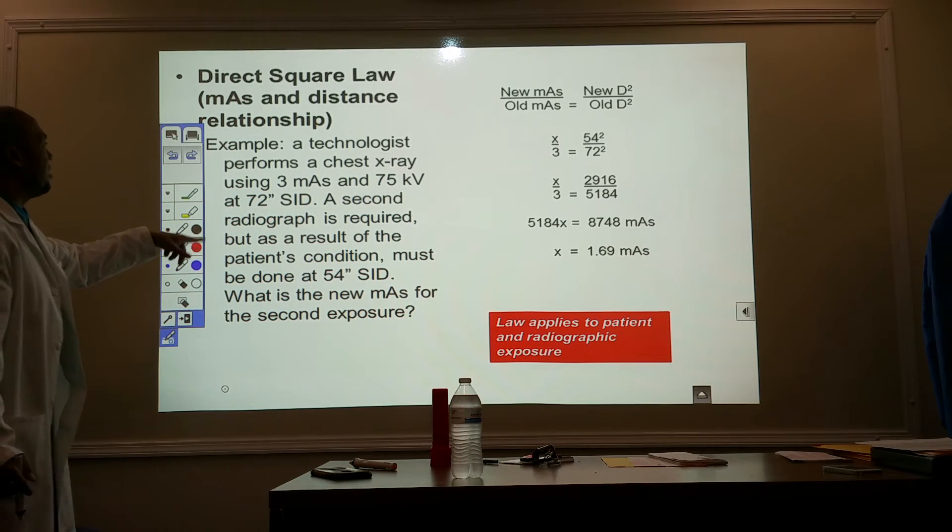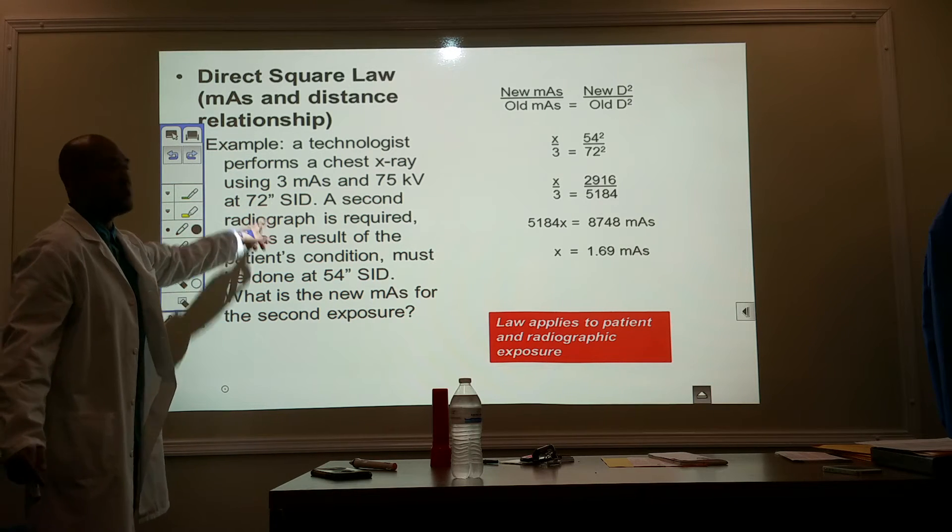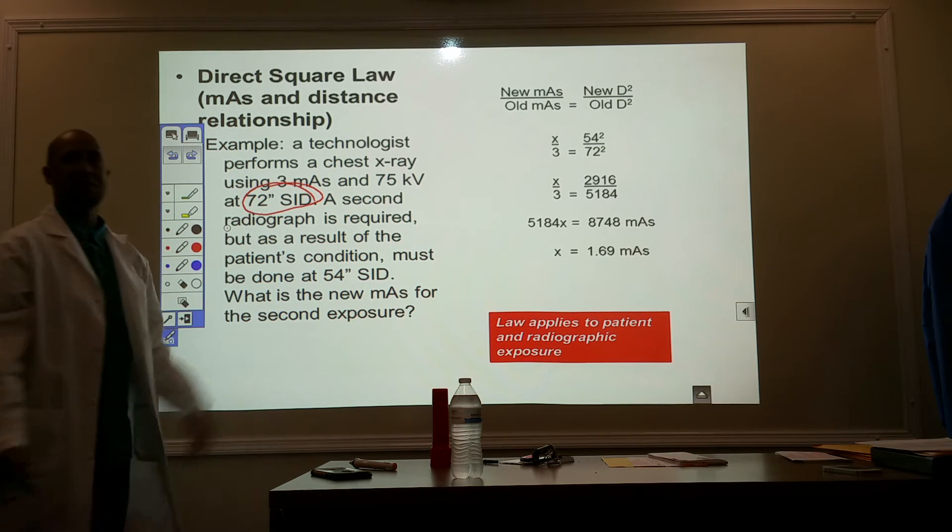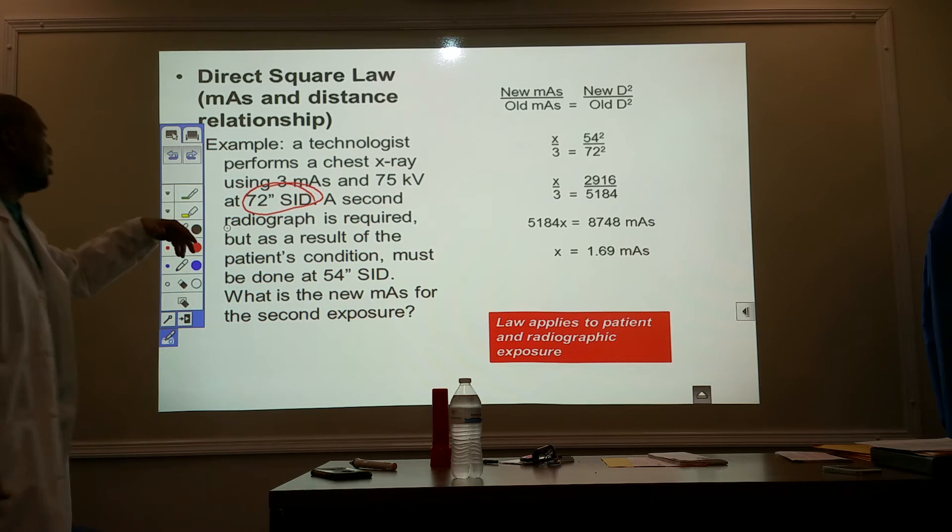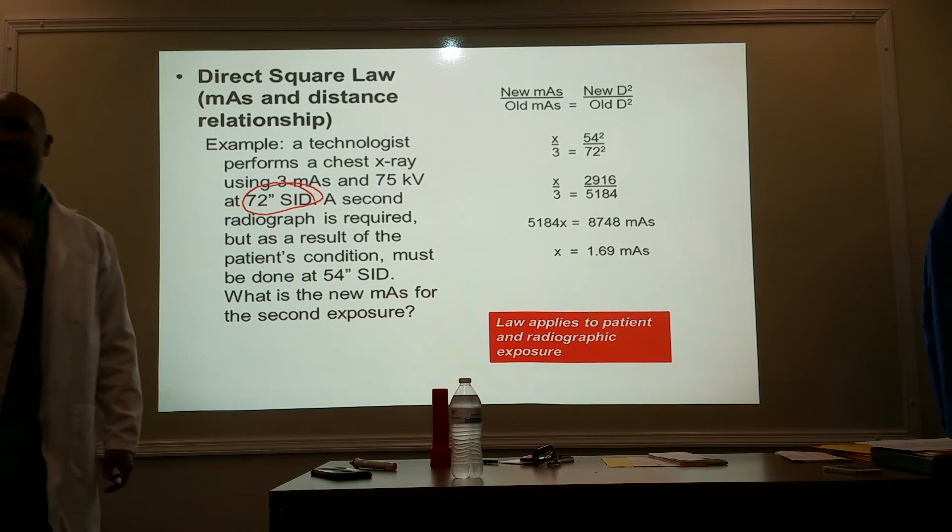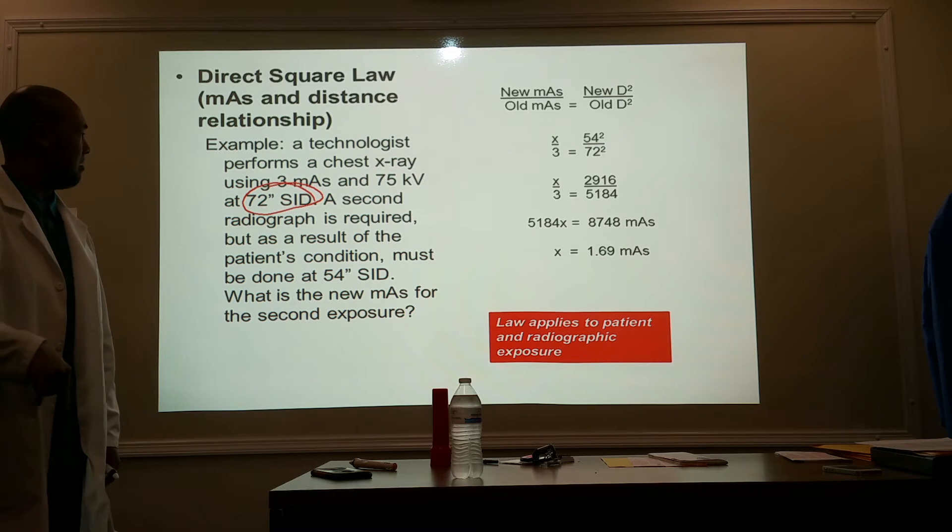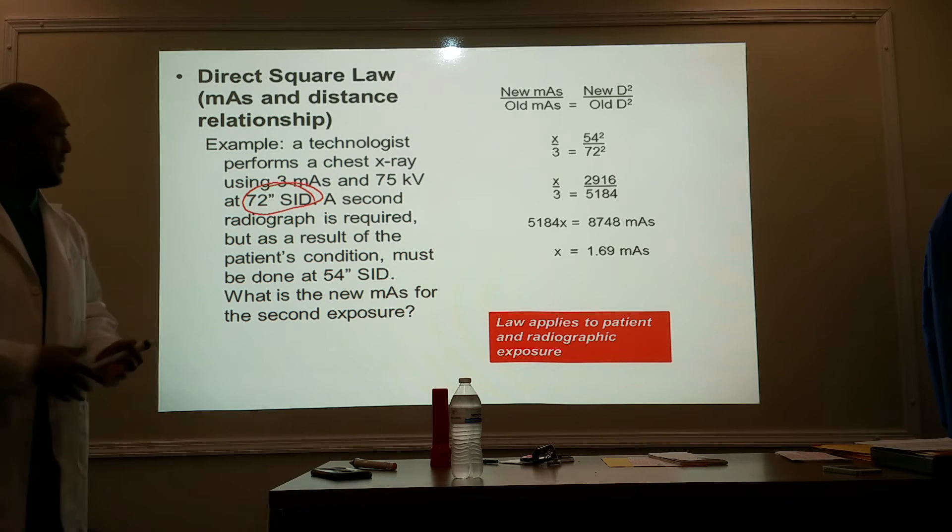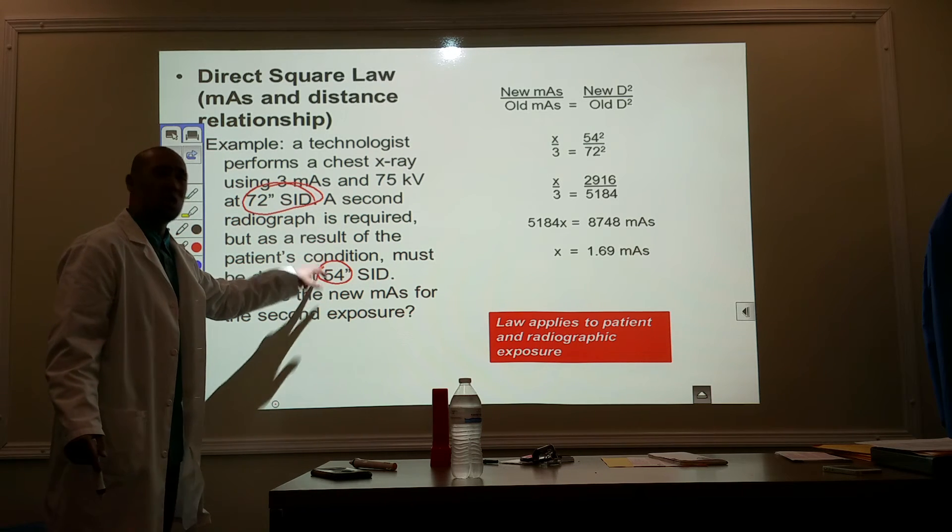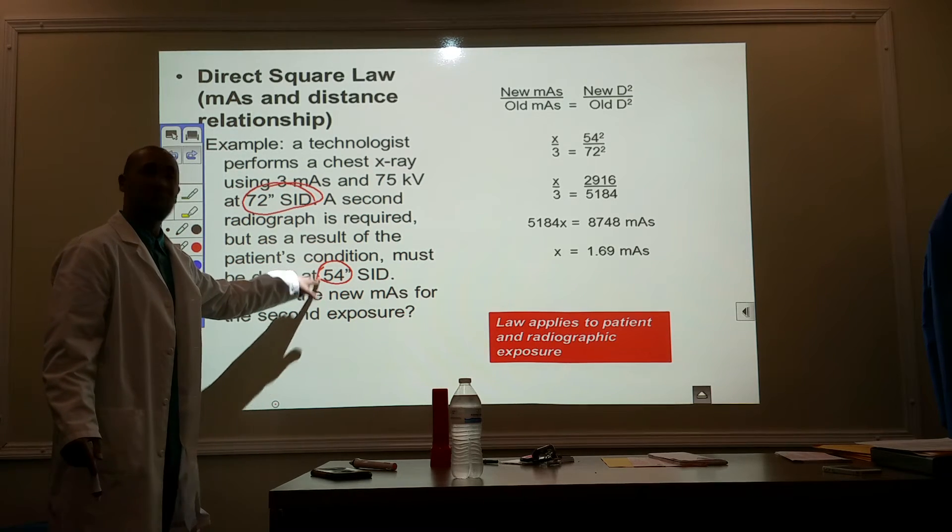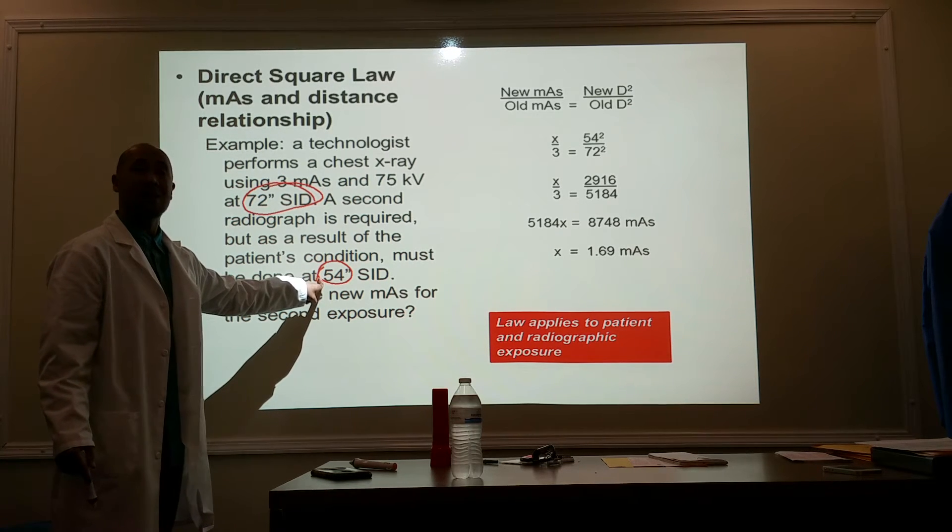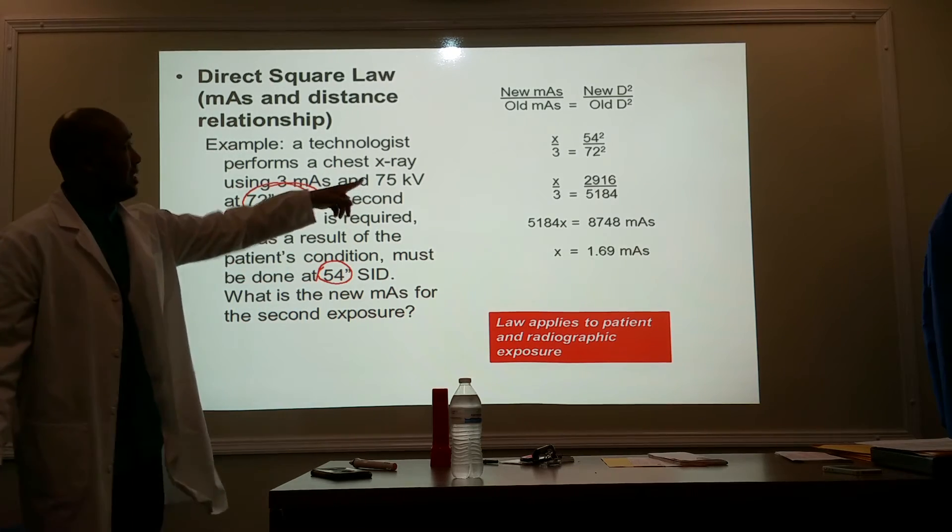Here. A technologist performs a chest x-ray using 3 mAs and 75 kV at 72 inches. This was done in the department. I got my 72 inches. It was perfect. And I know that technical factor, those sets of technical factors will work at 72 inches. However, sometime between when the patient was admitted and got really, really sick and then got sent to the ICU, now the patient can't come down for an x-ray. I have to go shoot an x-ray portably in their bed. And due to the environmental circumstances, I can only get 54 inches. I can't get my maximum 72 inches. I'm going to be doing it a lot closer. So, if I don't adjust my technical factors with the change in distance, my film's going to be too what? It's going to be too dark. So, I need to cut my technical factors to accommodate for the closer distance.